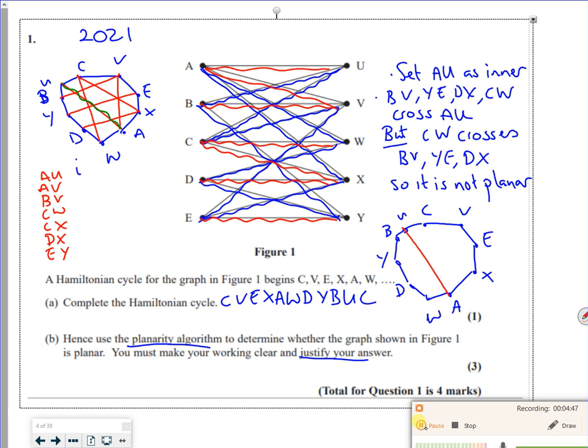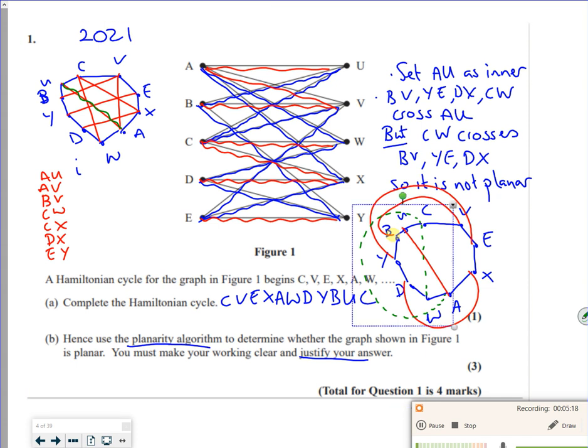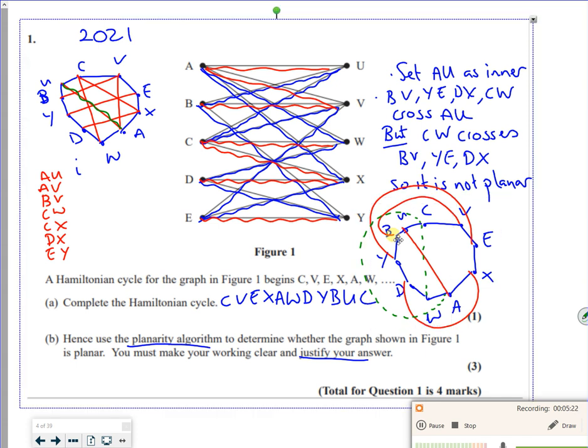So I've got U, A in. If I put B to V in as an outer, and then Y to E is going to be an outer, and then D to X is going to be an outer. But then my issue is now, what do I do with the C, W? So C, W, if it goes inside, will cross over. But if it goes outside, it will also cross over there, you see? So that's why it doesn't work. So I hope that kind of made sense. Bye-bye.